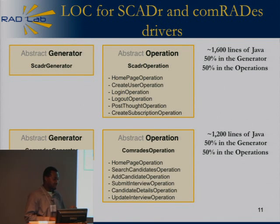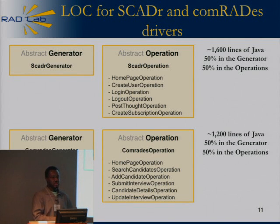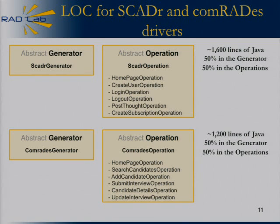To give a sense of complexity: the drivers we created for SCADs and Comrades are on the order of a thousand lines of code, with roughly 50% for the generator and 50% for the operations. For a system like Scatter, there are only six operations that really matter: visiting the home page, login, creating new user accounts, posting thoughts, and creating subscriptions. Encouragingly, since we strove for generic generators, some refactoring could reduce the portion of code you need to recreate for new generators.